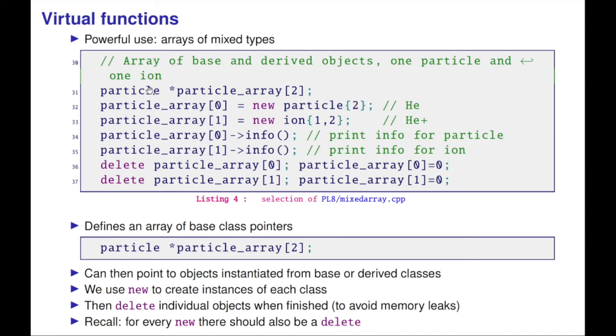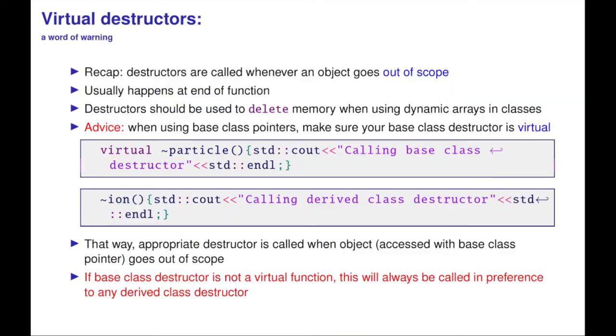It's a powerful use—you can have arrays of mixed type. I've got a particle array of pointers: new particle, new ion. I can print out the info and it does all the right stuff. It defines an array of base class pointers that can point to objects from the base or derived class. We use new to create instances of each class and delete individual objects when finished to avoid memory leak. Recall, for every new there should be a delete, and I'm being careful about that here.